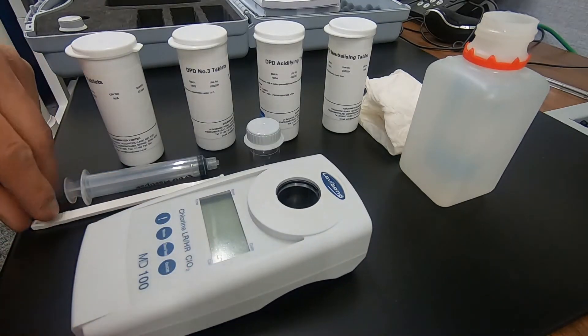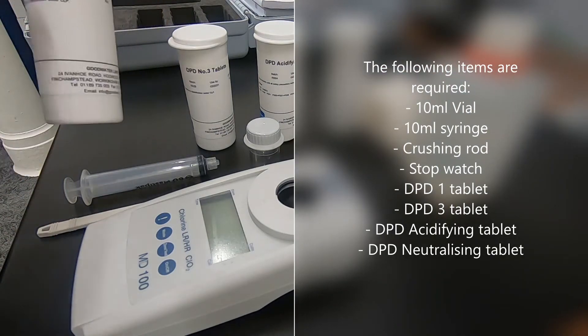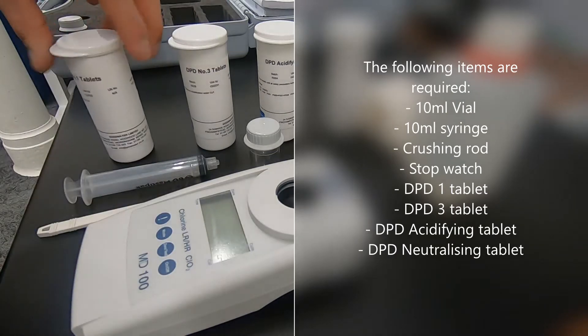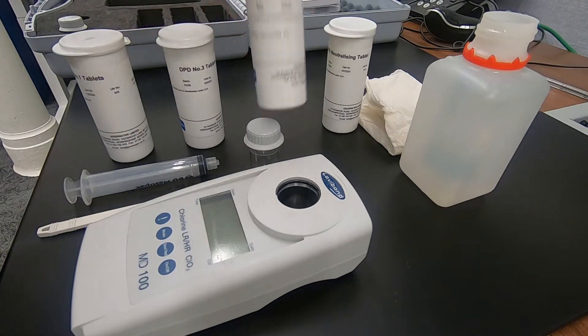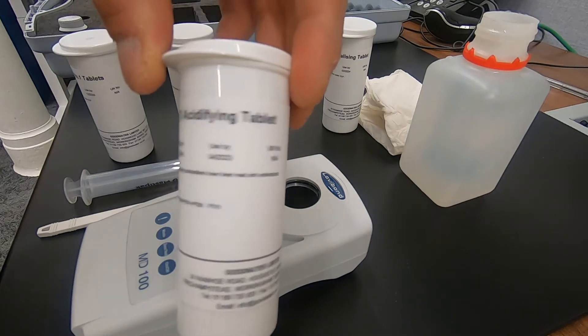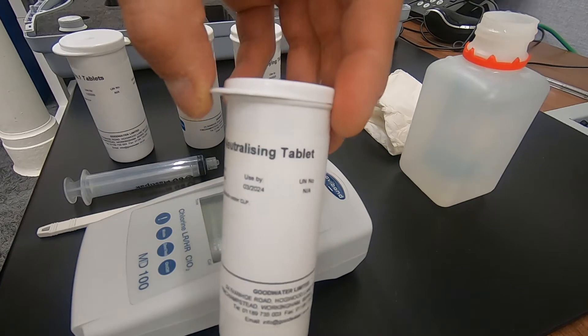This is using the MD100 photometer as we can see here. For this particular test for the total halogens we need four reagents. We need a DPD number one, a DPD number three, a DPD acidifying and a DPD neutralizing.